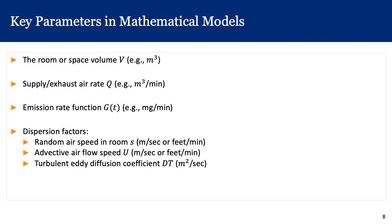Later models also include additional parameters: the random air speed in the room, denoted by lowercase s in meters per second or feet per minute; the advective airflow with directionality, denoted by capital U; and if we use the turbulent eddy diffusion model, the turbulent eddy diffusion coefficient D-sub-t, which has units of area per unit time, for example square meters per second.